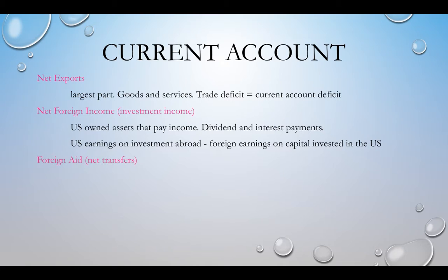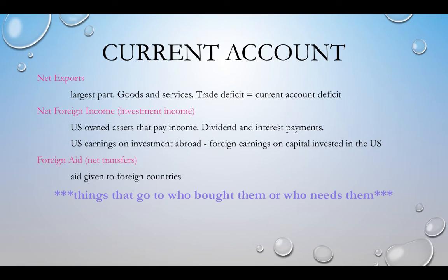Foreign aid and net transfers make up the third part of the current account. This is money we send to foreign countries — from our government as aid, or personally, like sending money to a relative in Poland or Brazil. Any money leaving the country is part of the current account. A key rule of thumb: things that go out of the country to where they're bought or needed are part of the current account.